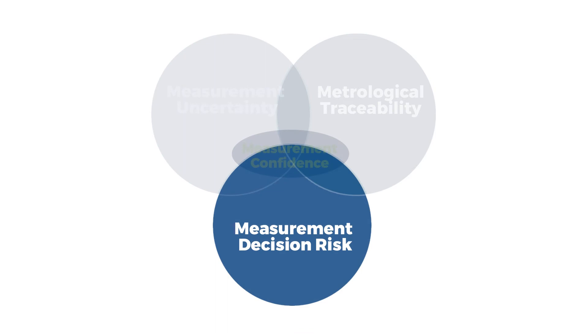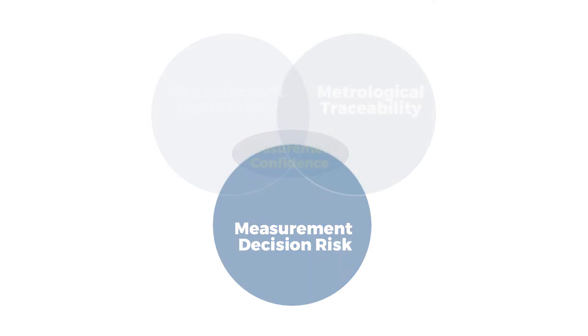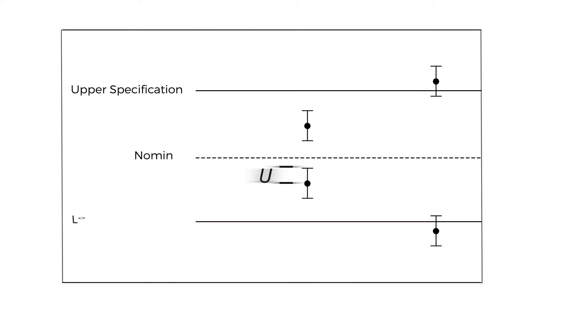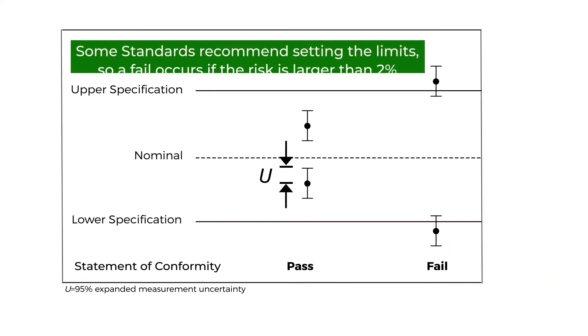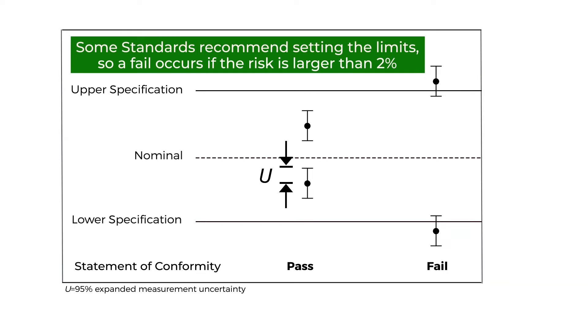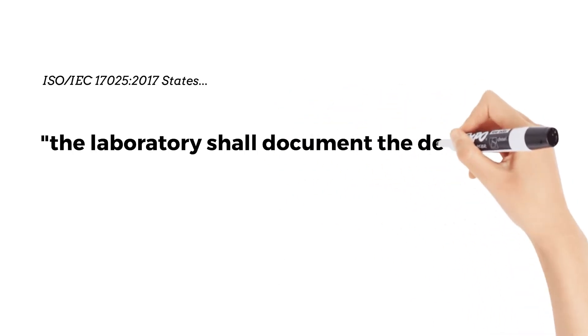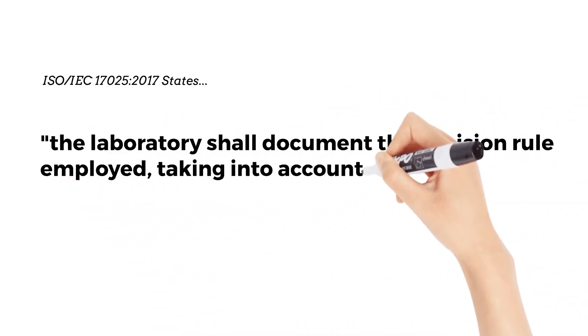Measurement decision risk focuses on understanding decision risk and TUR. When discussing decision rules, we describe how measurement uncertainty is accounted for when stating conformity with a specified requirement. The conformity for most is binary, meaning either a pass or a fail, and some standards recommend setting the limits so a fail occurs if the total risk is larger than 2%. The laboratory shall document the decision rule employed, taking into account the level of risk.